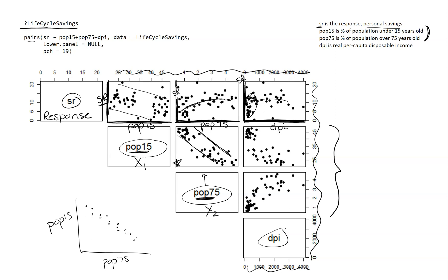So those are the two primary uses for this scatterplot matrix. One: to assess a linear relationship between the response and each explanatory variable — I would use that top row, provided the top row has the response on the edge. And then the other use is to determine if there's any multicollinearity, or in other words, two explanatory variables that are very highly correlated with each other. I hope this helped answer any questions you might have had about the graph.